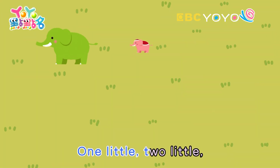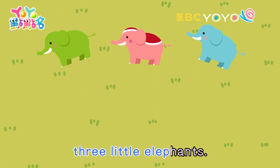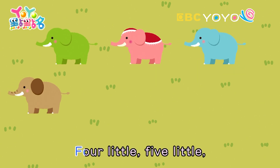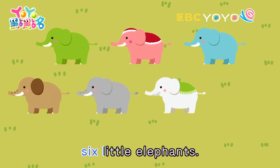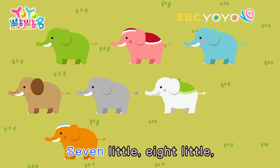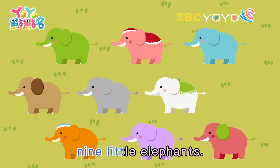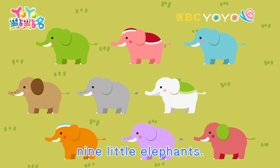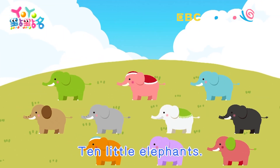One little, two little, three little elephants. Four little, five little, six little elephants. Seven little, eight little, nine little elephants. Ten little elephants.